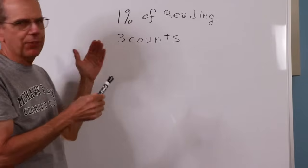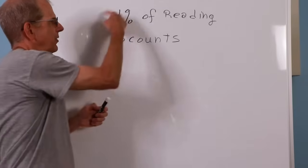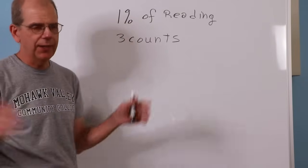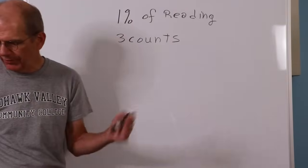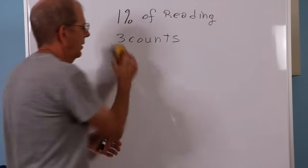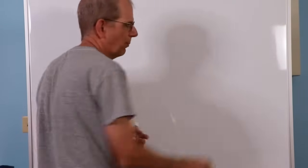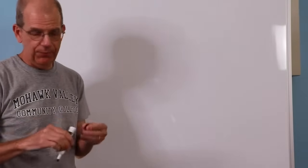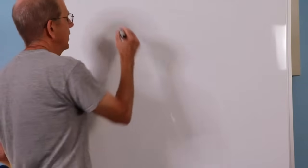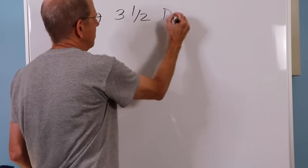So what's the counts part of it? Because this goes a little bit further, you know, it would be nice if it was just 1% of reading and that was the end of it. But you will often see on digital meters this extra thing, this counts business. So what's a count? Well, when we look at a meter itself, it has a finite number of digits.